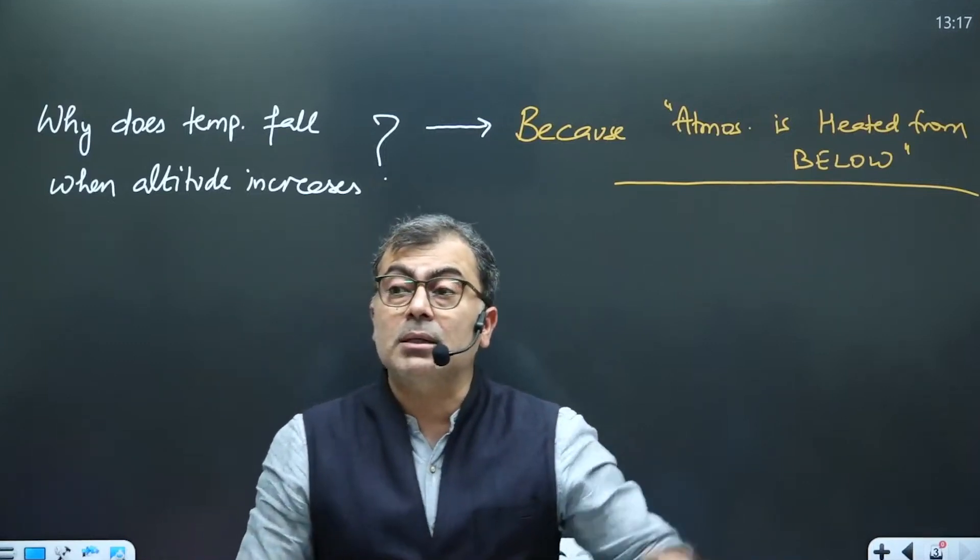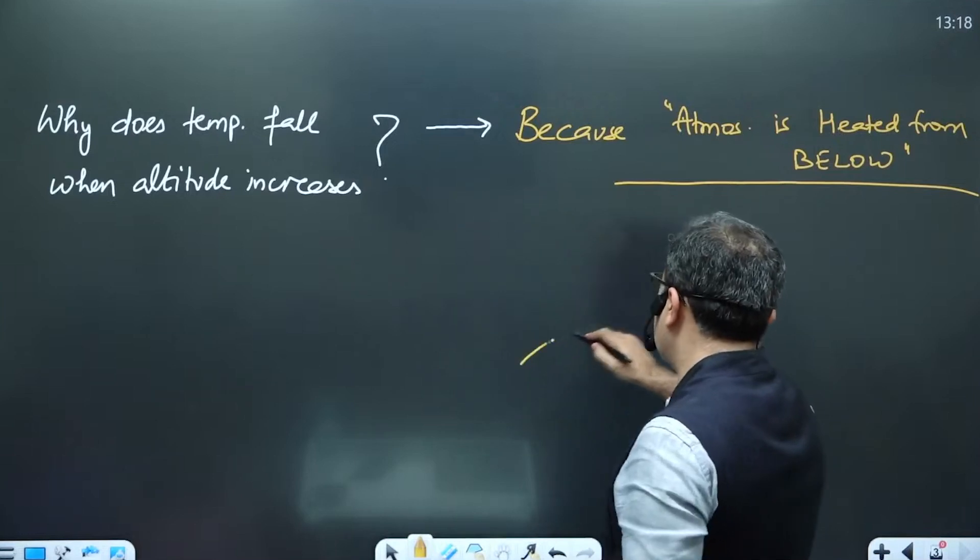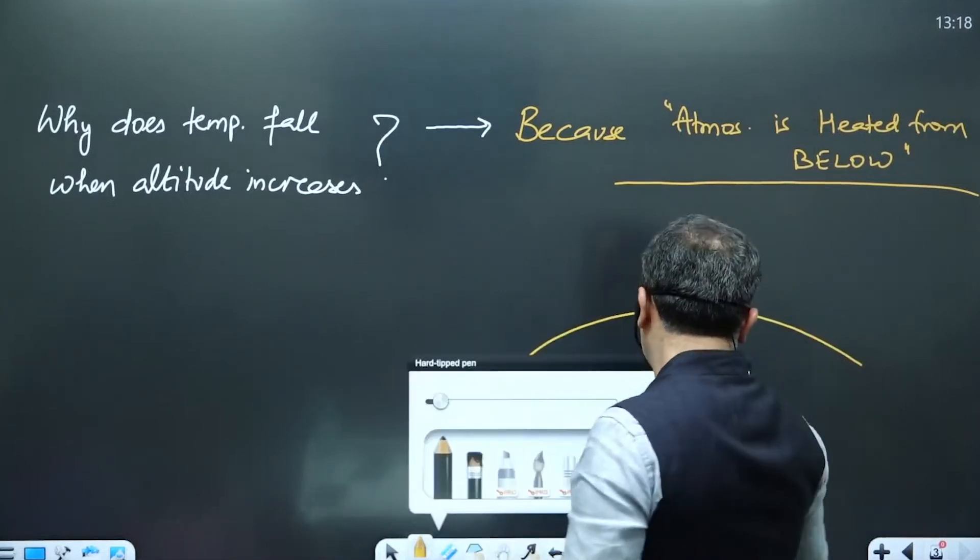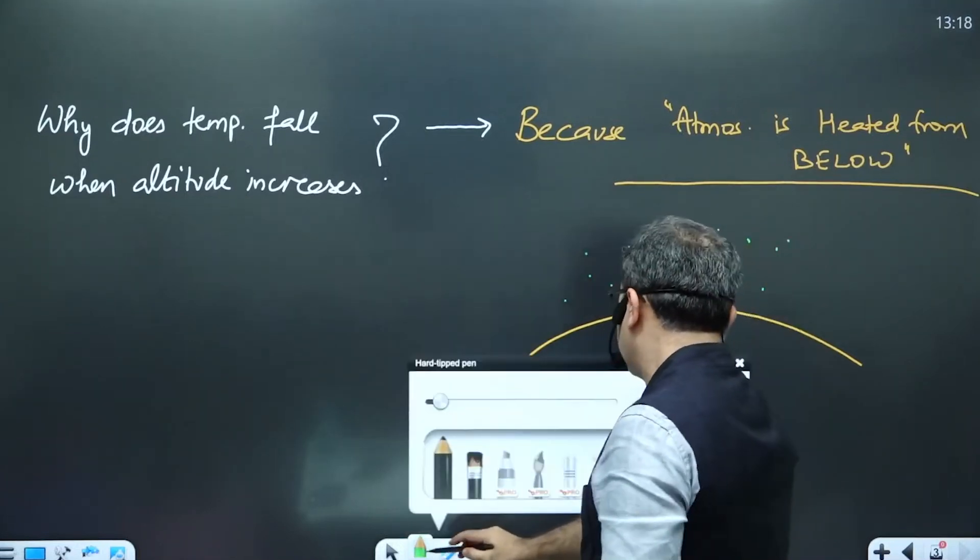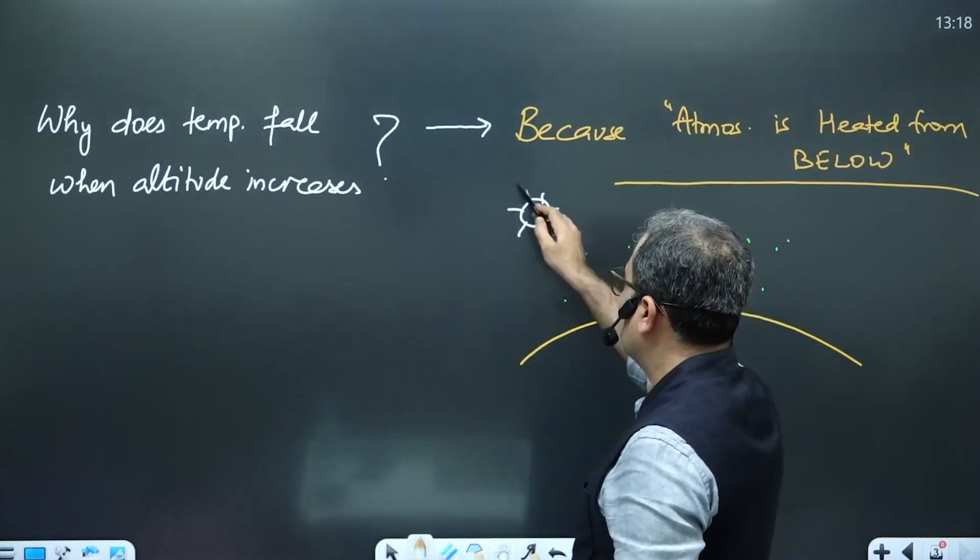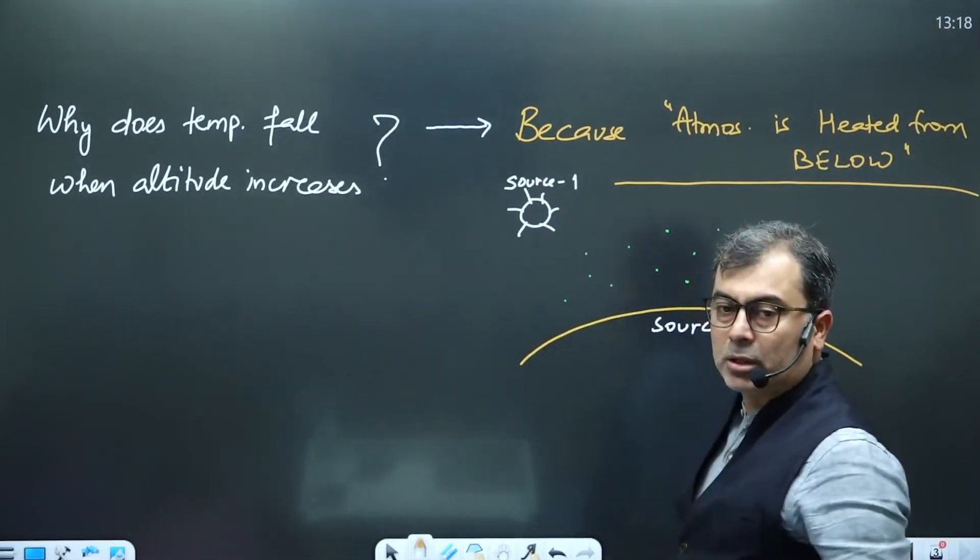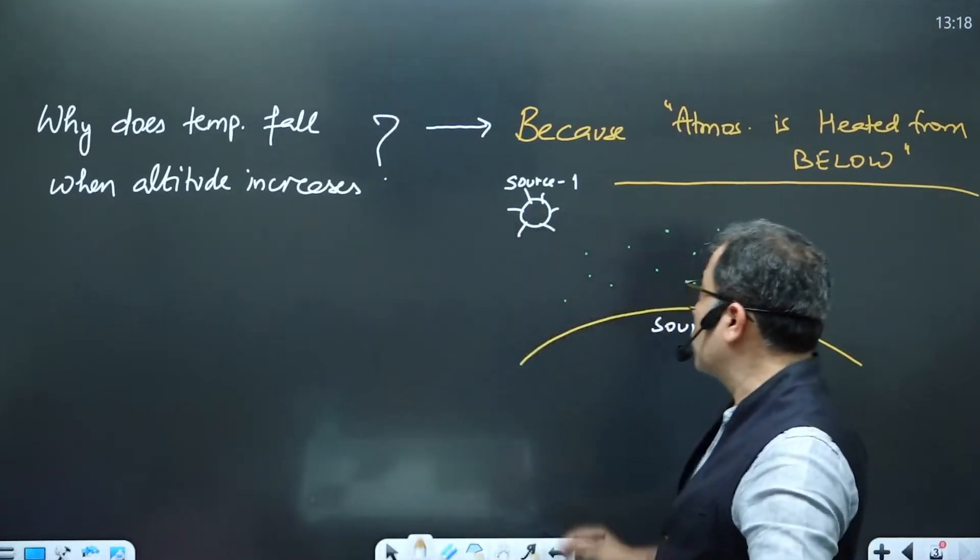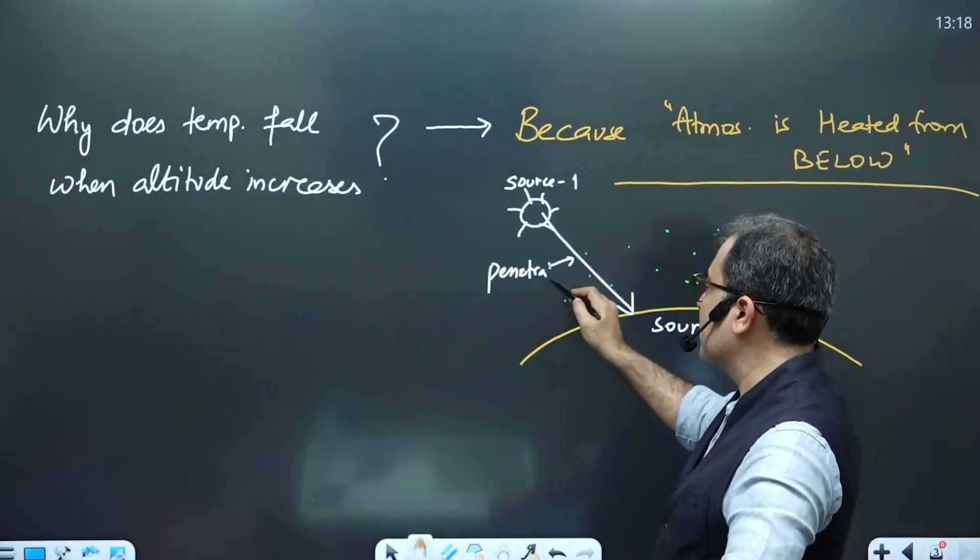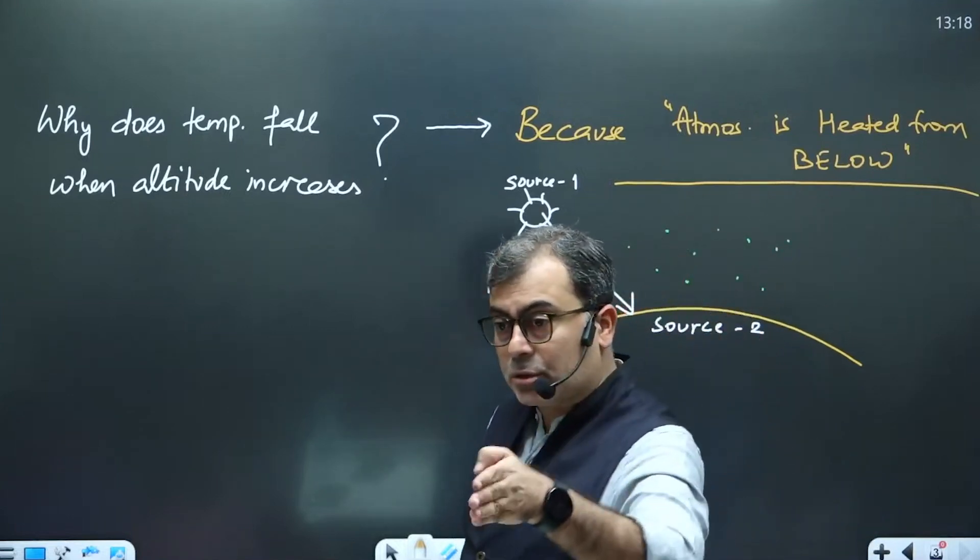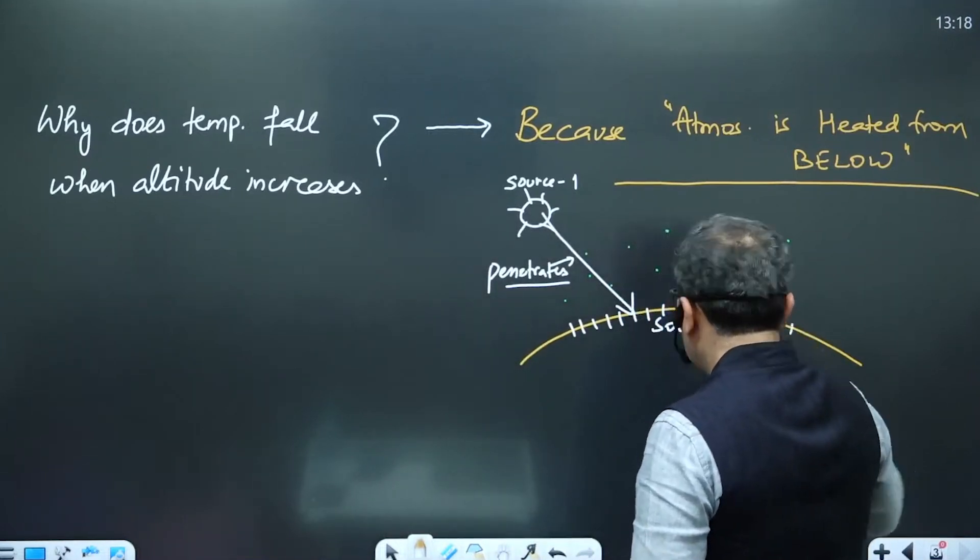Why? Because sun's rays are so energetic that they can penetrate through the atmosphere. So this is earth, and this is the atmospheric gas. And here we have the sun. So the atmosphere will get heated from two sources. Now the problem is source one, when it sends the energy, this energy penetrates the atmosphere. It has so much energy that it can pass through without causing any heating. And when it reaches the earth, it heats up the earth. Earth becomes hot.